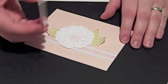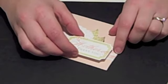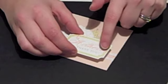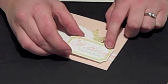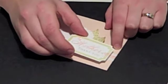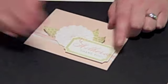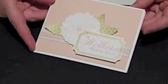I've put the foam dimensionals on the back of this frame, and I'm going to adhere it in place. And I want you to note that these three lines coming out from the end of the word Mother should line up very nicely with the lines in the ribbon. Just like that. And after you've adhered that card front to the white card base, you have your finished card.